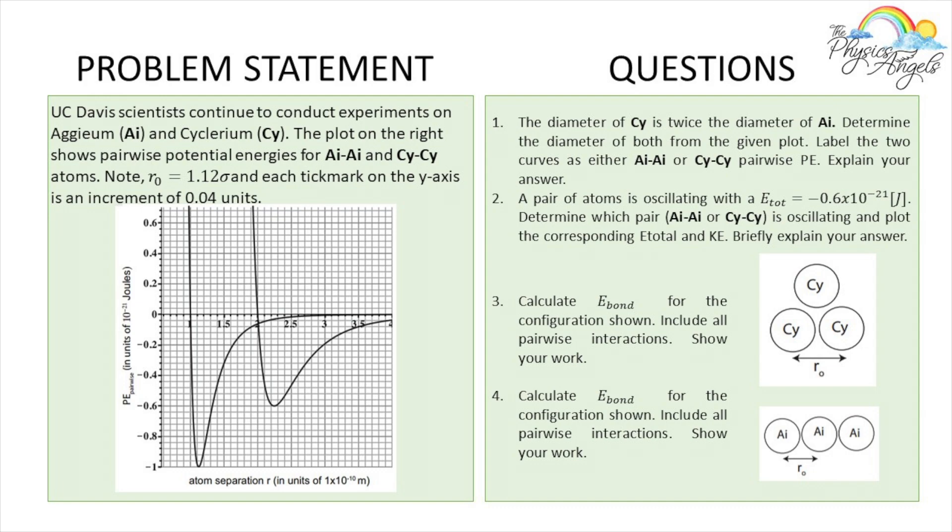A pair of atoms is oscillating with an E_total of -0.6 × 10⁻²¹ joules. We have to figure out whether it's Aegeum or Cyclerium and then plot the corresponding E_total and kinetic energy. Briefly explain your answer.